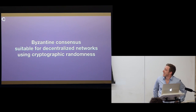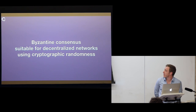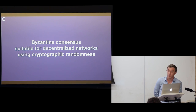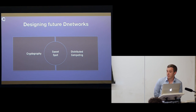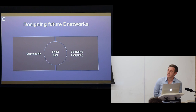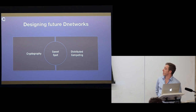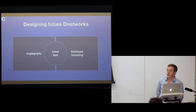Thank you for the introduction. I'm hoping to introduce a kind of Byzantine consensus protocol from the distributed computing branch of computer science, and this can be used in a variety of decentralized networks. A D-network is a decentralized network. Of course, cryptocurrencies are decentralized networks, but many different kinds of decentralized network are possible. My perspective on D-networks is that the sweet spot is in between cryptography and distributed computing.